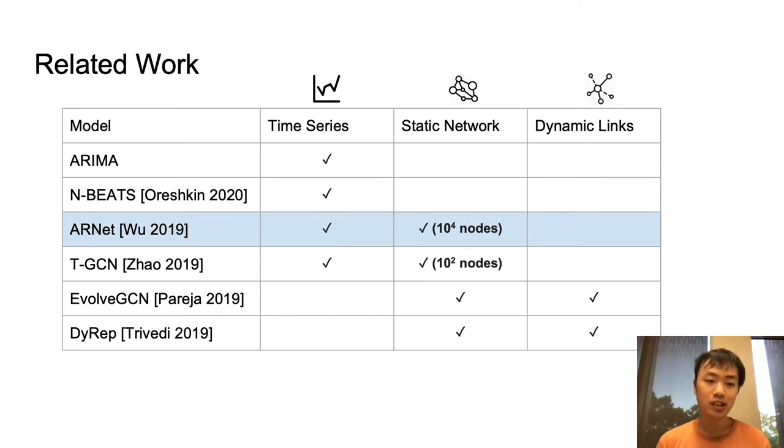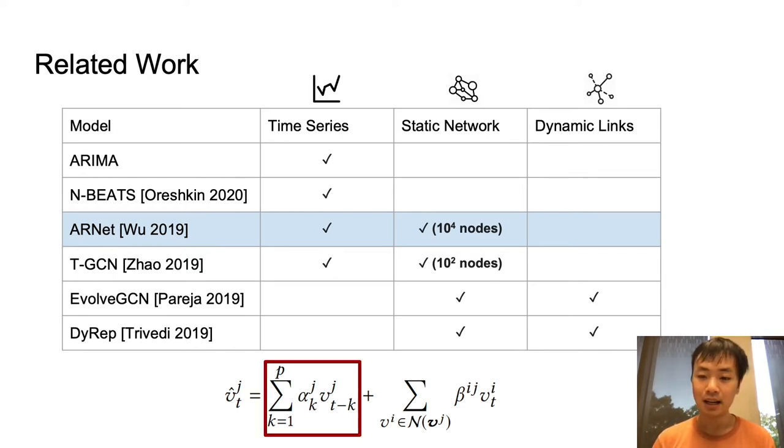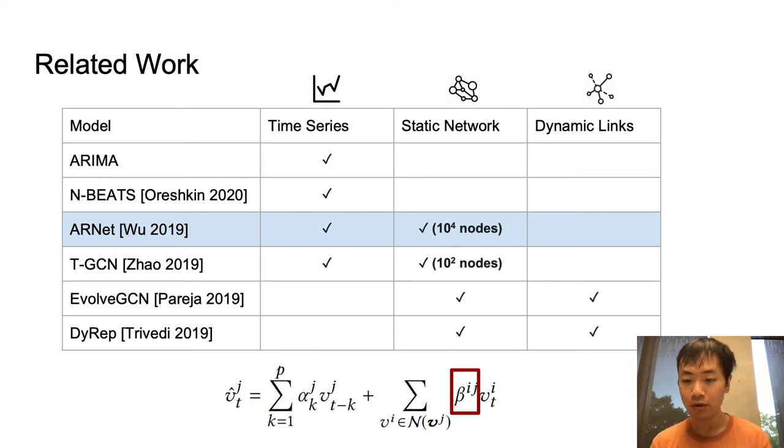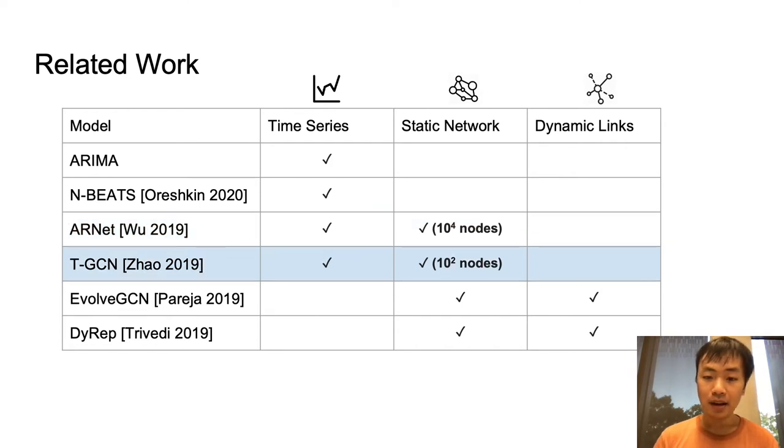When it comes to networks of time series, two approaches have been proposed. One of them is a regression model called ARNET, where the prediction is simply a weighted sum of past observations and also of the neighboring nodes' current observations. The coefficients in ARNET can be concretely interpreted as the proportion of traffic flowing from one node to another node. The other approach is a neural model, TTCN, where we add a graph neural network inside every RNN cell.